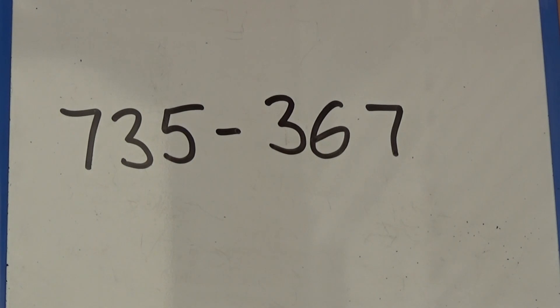This time, I'm going to show you what happens when there are more ones and tens in the second number than there are in the first number. I'm going to use the column method to work out seven hundred and thirty-five minus three hundred and sixty-seven.